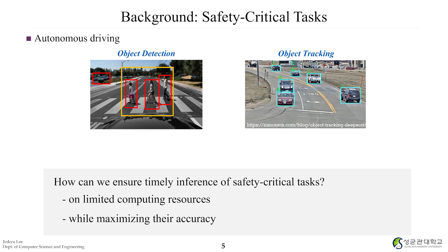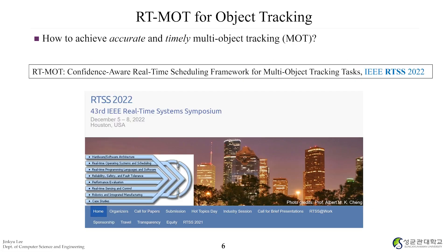So this is the motivation. Today I will explain an example about multi-object tracking tasks. This paper was published in 2022, titled RTMOT: Confidence-Aware Real-Time Scheduling Framework for Multi-Object Tracking Tasks. By the way, RTSS is the number one international conference in the area of real-time systems. Every year, only 30 to 40 papers are published there.